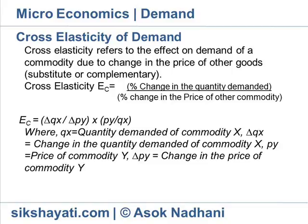Example: If the quantity demanded of A increases by 10% when the price of B increases by 20%, the cross-elasticity of demand between A and B will be: EC = 10% / 20% = 0.50.